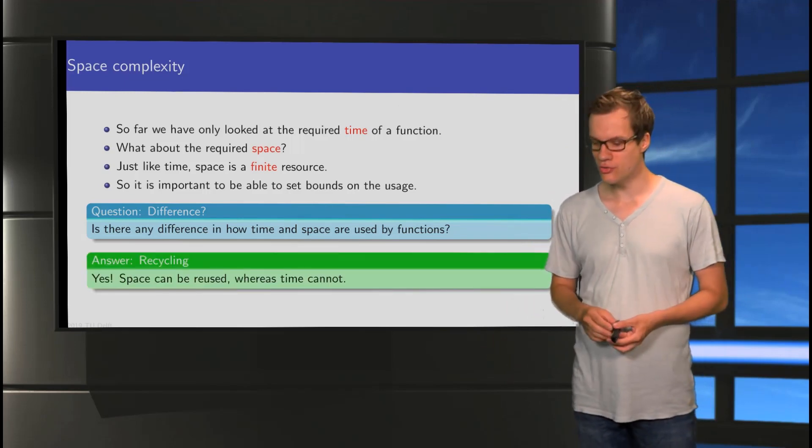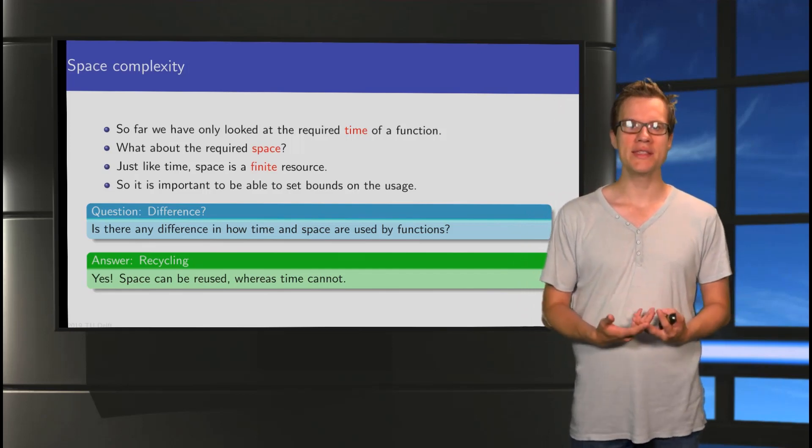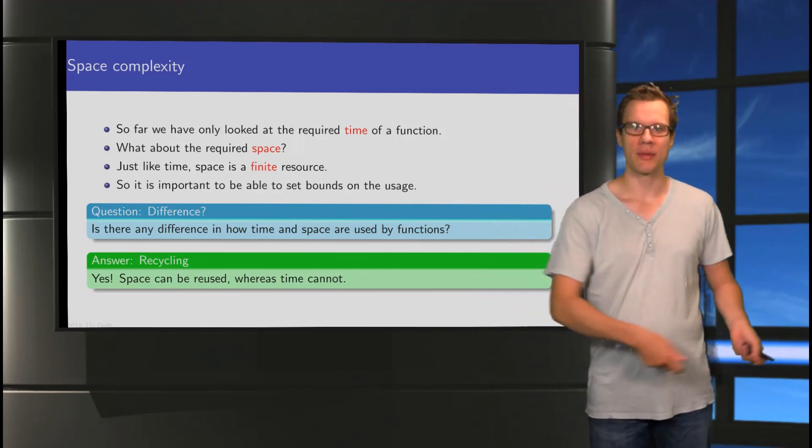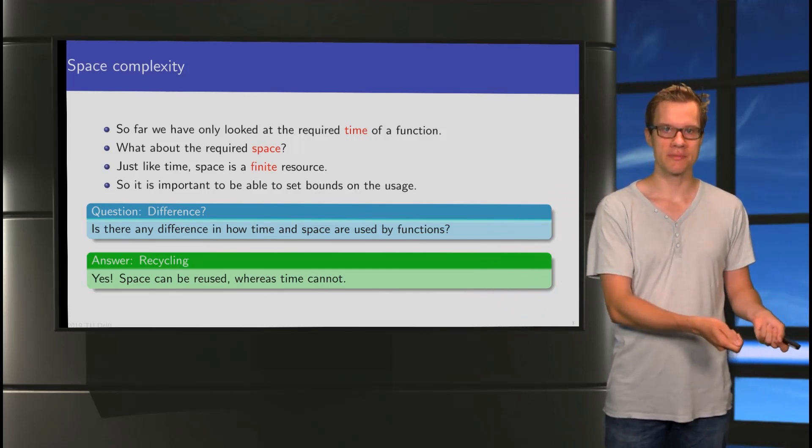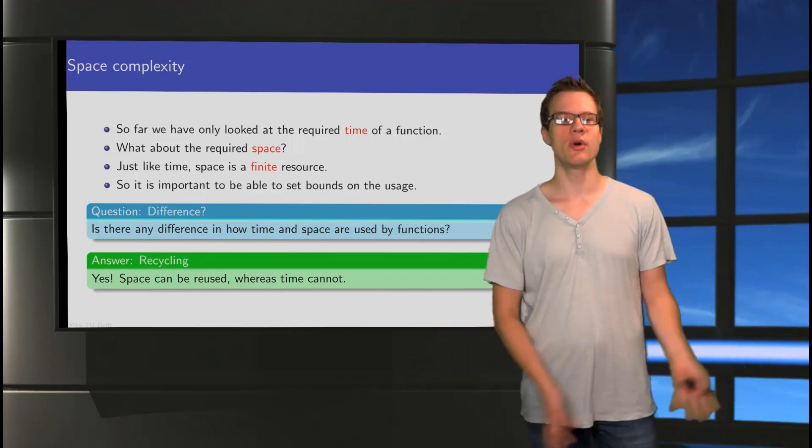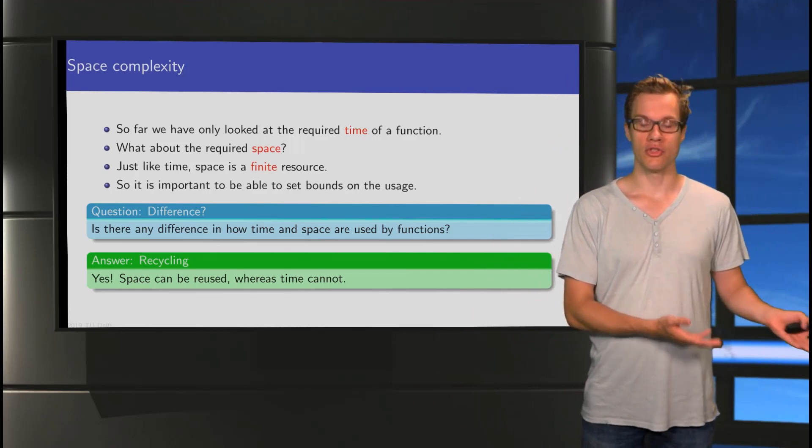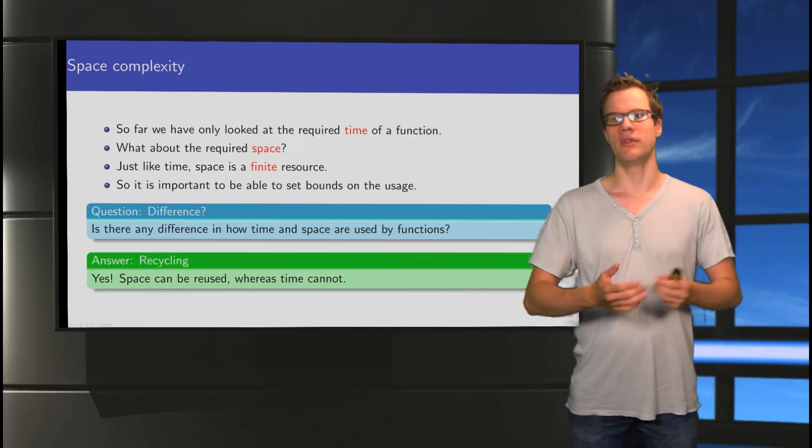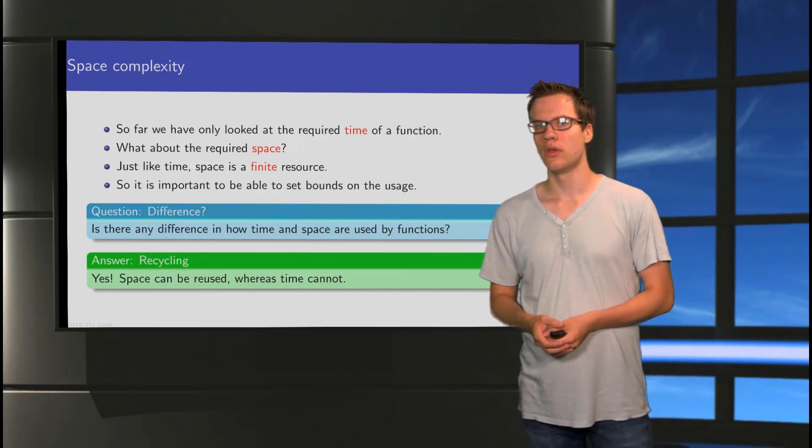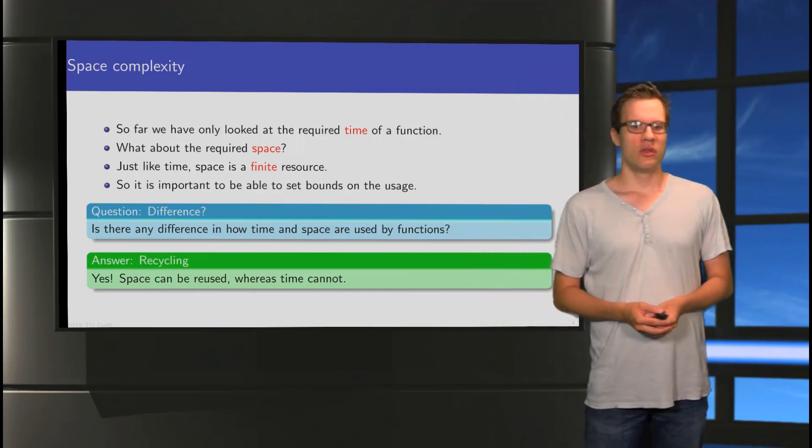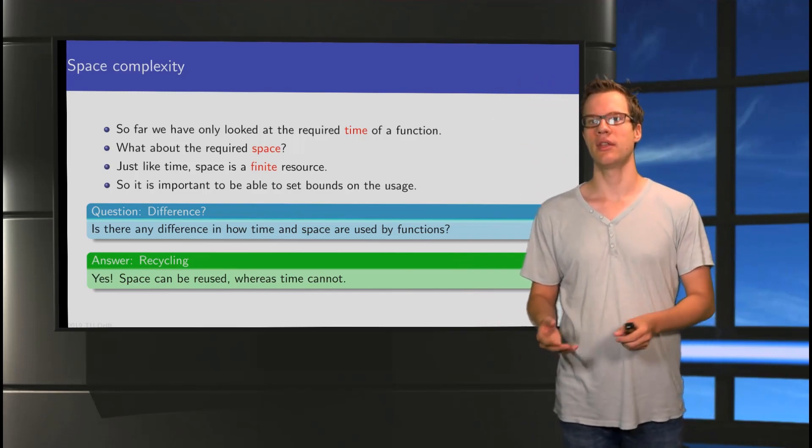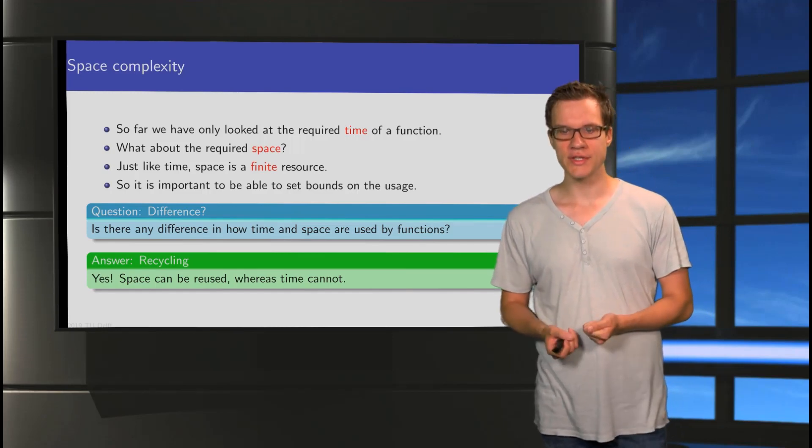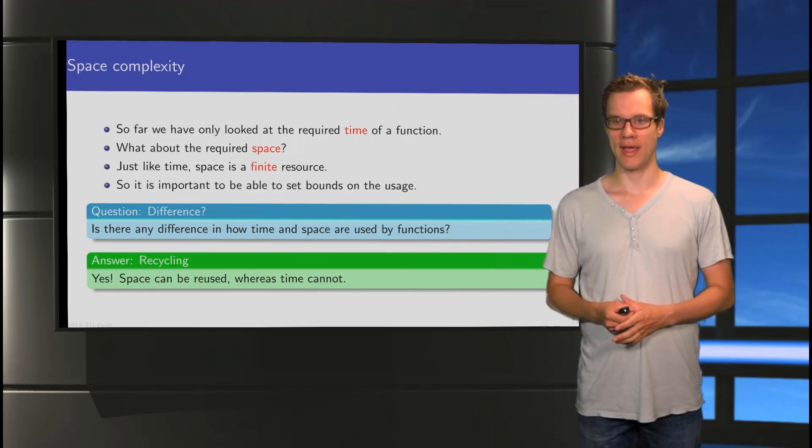So the question is, is there a difference at all between how we analyze time and how we analyze space? And the answer is yes there is. And it has to do with a very simple observation that space is something we can reuse. Imagine that I'm currently parking my car somewhere. I'm using the parking space. But as soon as I take my car out, someone else can use it. The space can be reused. But the time during which my car was parked there cannot be reused. So yes, space can be reused, but time cannot.